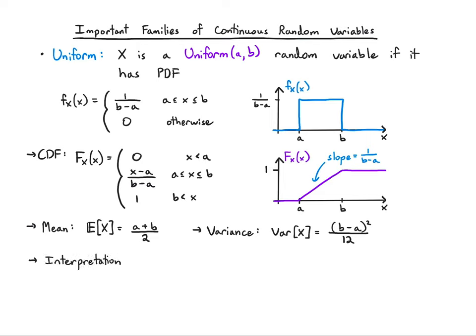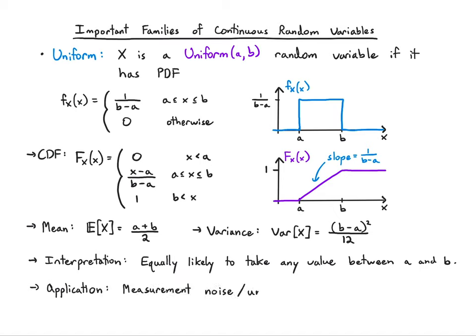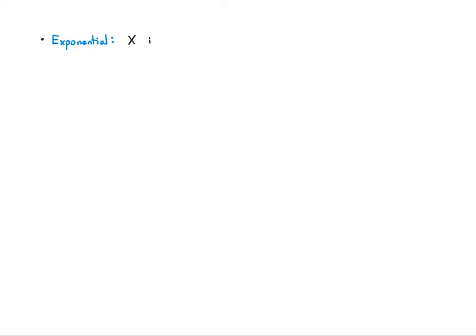The interpretation is that it's equally likely to take any value between a and b, but now it's continuous. The application we typically see is something like measurement noise or uncertainty for a continuous random variable for which we only have a bounded range. For example, maybe I have something I believe lies between one and three and don't know much more, so I model it as uniform between one and three.